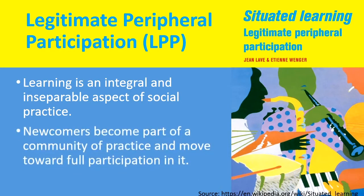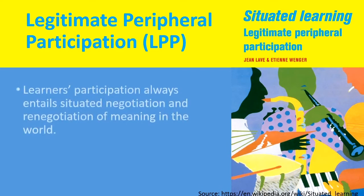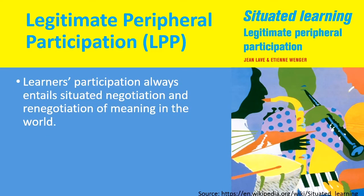Lave and Wenger further explained that newcomers become part of the community of practice when they enter it, and slowly they learn how to participate and they move towards full participation in social practices. Learners' participation always entails situated negotiation and renegotiation of meaning. When learners start to participate in any given situation, they negotiate with the situation — they try to apply their knowledge, understanding, previous knowledge, and experiences to deal with it, and they observe how others are dealing with it.